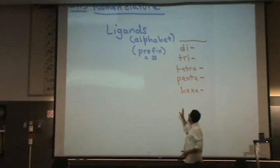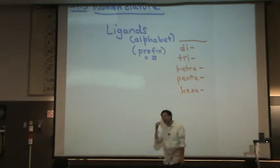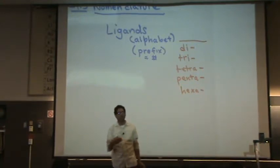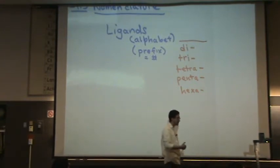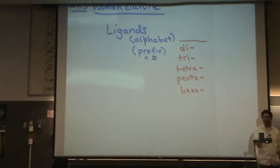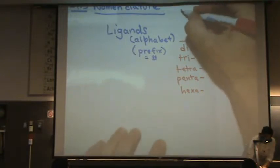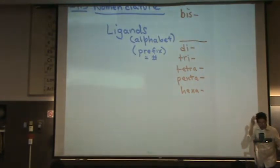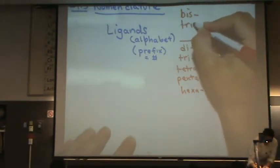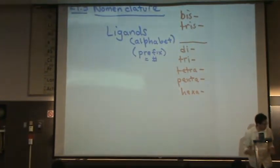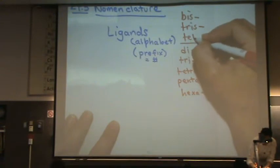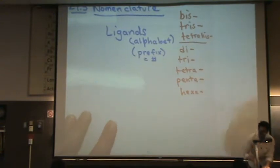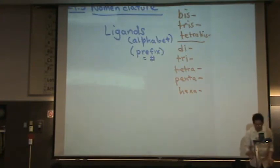These prefixes are only for ligands that are monodentate. If you have a polydentate ligand and there's more than one of them, you must use a special prefix that ends in -is or -kis. For two polydentate ligands, you put bis. For three, you put tris. You're not really going to go above three, but for reference: tetrakis for four, pentakis, hexakis, heptakis, etc.